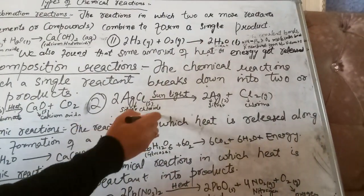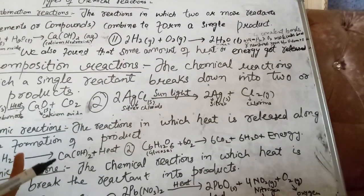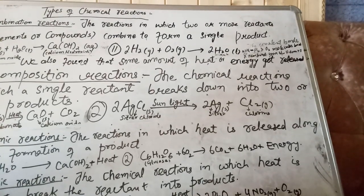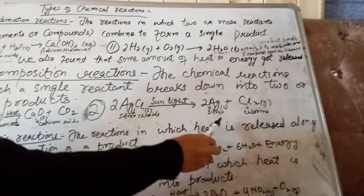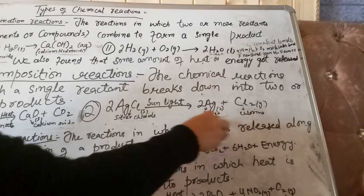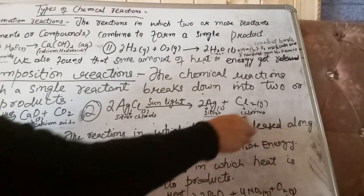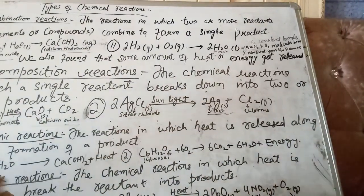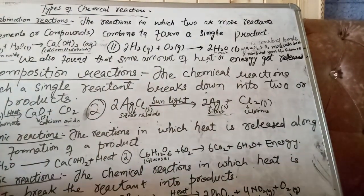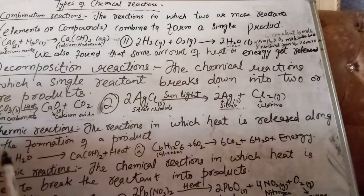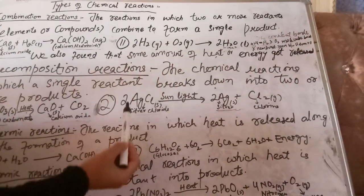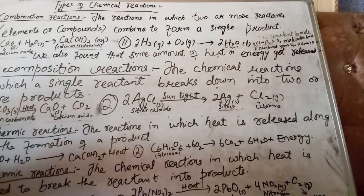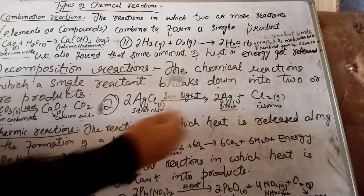Similarly, when we put silver chloride in a beaker under sunlight, silver chloride breaks down into silver and chlorine gas, and the color of the silver chloride changes to gray-green. So in decomposition reactions, a single reactant decomposes with the help of some external energy — be it heat or sunlight — into two or more products.